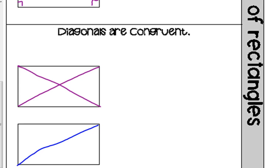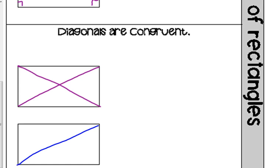The properties of parallelograms also apply — the diagonals bisect each other. Those two pieces are equal, and these two pieces right here are equal to each other. Since the diagonals are congruent and bisected, all those pieces are congruent to each other.